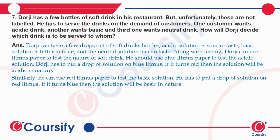Durji has a few bottles of soft drink in his restaurant, but unfortunately these are not labeled. He has to serve the drinks on the demand of customers. One customer wants an acidic drink, another wants a basic drink, and a third one wants a neutral drink. How will Durji decide which drink is to be served to whom?